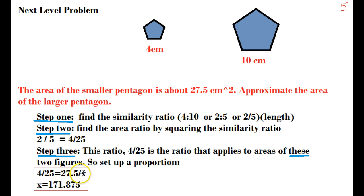Step 3: set up a proportion using the applicable ratio 4 over 25 equals 27.5 over x, where 27.5 is the smaller area and x is the larger area (small over large). Solving gives x equals 171.875. The key is that we had to work through the ratio steps to get the area ratio — our applicable ratio of 4 over 25 — before setting up the proportion.